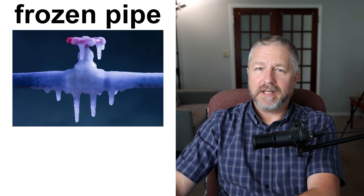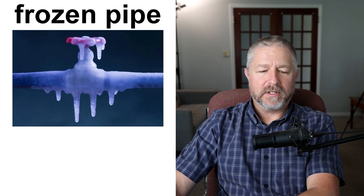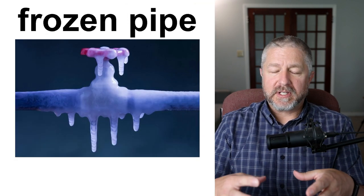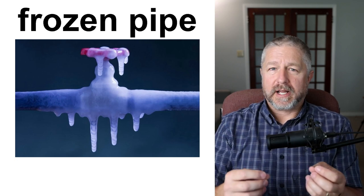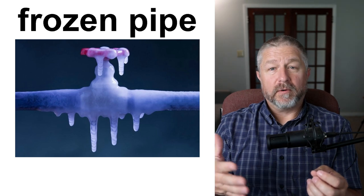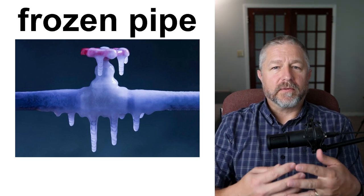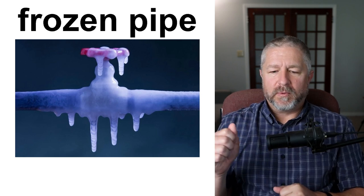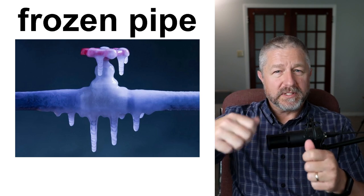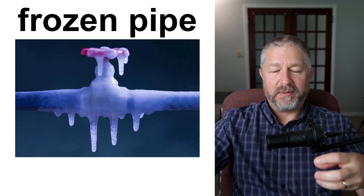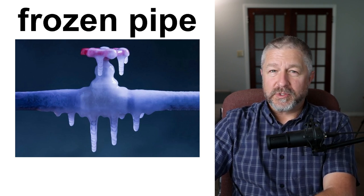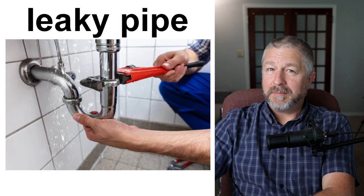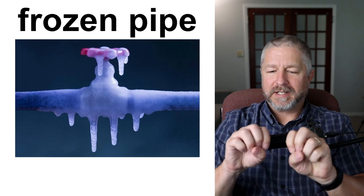A frozen pipe. If you live somewhere warm, this never happens, but in places like Canada in winter when it gets really cold, pipes can freeze. In our house, if it's below minus twenty-five for multiple days in a row and it's windy, we have to be careful the pipes don't freeze. If the pipes freeze, sometimes people will put a heater by the pipes, wrap warm towels around the pipe, soak towels in hot water and wrap them around, or use a hair dryer to try and thaw the pipes. You want to avoid frozen pipes because they can burst and then you might have a leaky pipe.